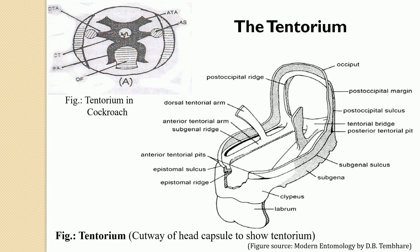The Tentorium serves to strengthen the stomodium — giving strength to the stomodium and the overall head capsule is its prime function. Along with that, the Tentorium is also responsible for providing a site of attachment for various kinds of muscles coming from different parts of the body.